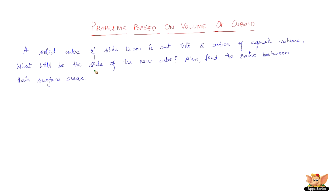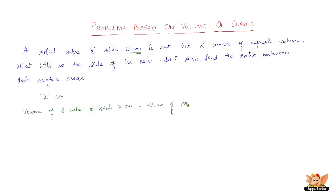Let's assume the length of the side of the new cube be x cm. So the volume of 8 cubes each of side x cm should be equal to the volume of the solid cube of side 12 cm.